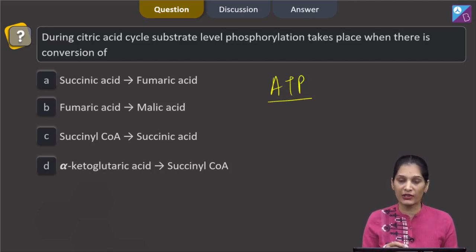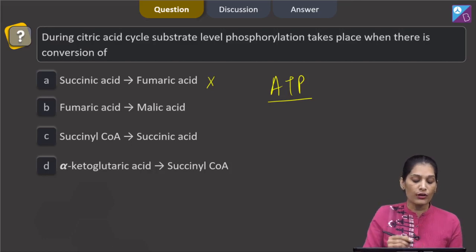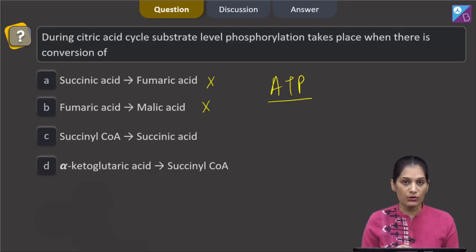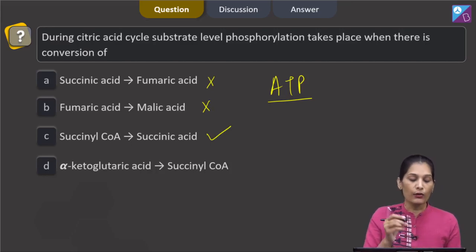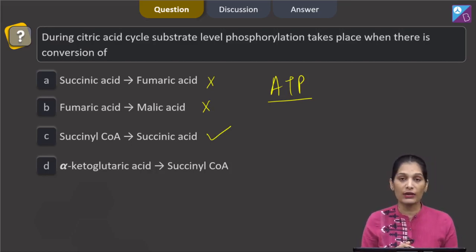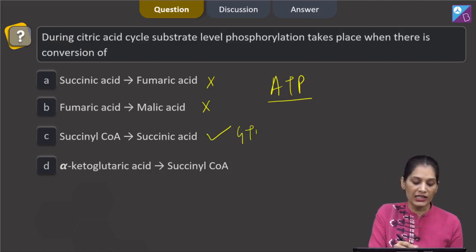So, from succinic acid to fumaric acid it happens? No. From fumaric to malic? No. From succinyl coenzyme A to succinic acid? Yes. When there is conversion of succinyl coenzyme A to succinic acid, there is formation of GTP.